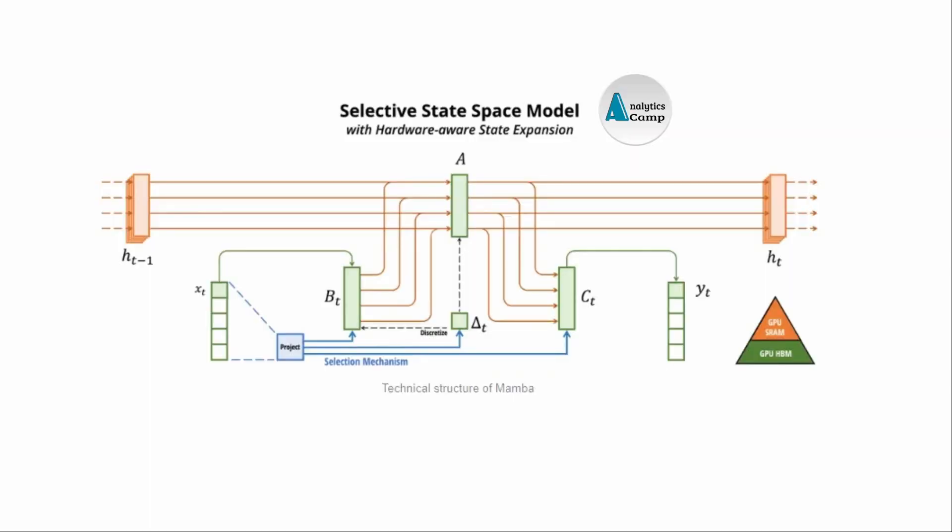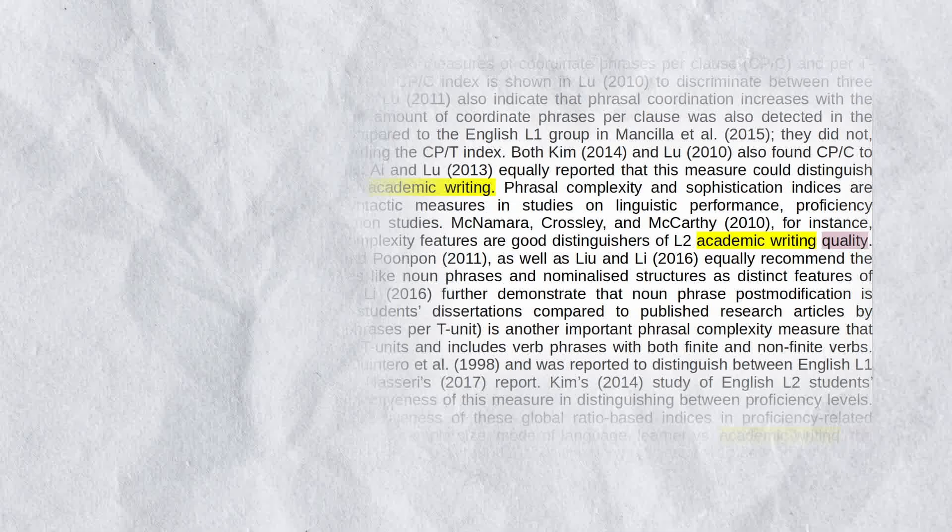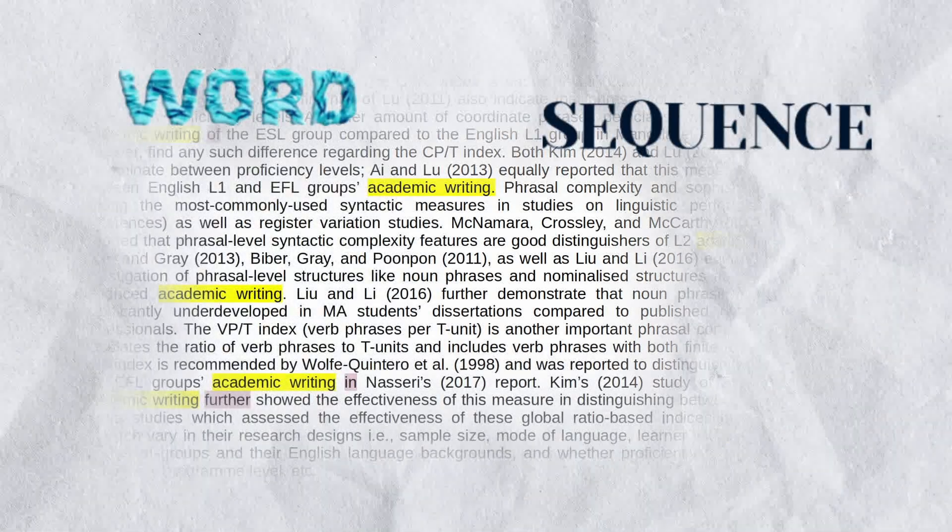The architecture takes advantage of three selective parameters of B, C, and delta, and one delayed parameter of A, which are all functions of the input, for example dependent on the words in a sequence.